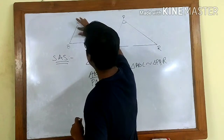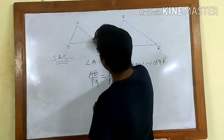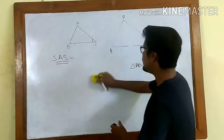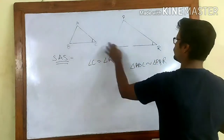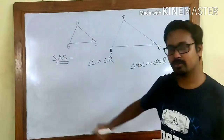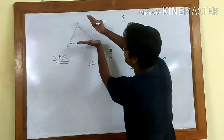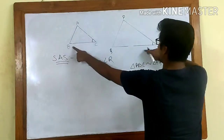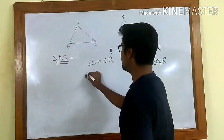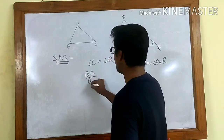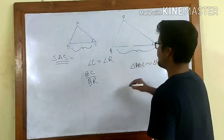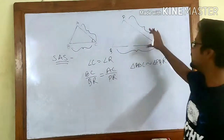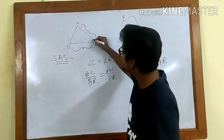Suppose the angle is not A but C. So suppose angle C is equal to angle R. In that case, things will change. For SAS, we must identify which two sides make angle C and which two sides make angle R. You can see that BC and AC make angle C, and QR and PR make angle R. So we must have BC to QR equal to AC to PR — this side to this side equals that side to that side.